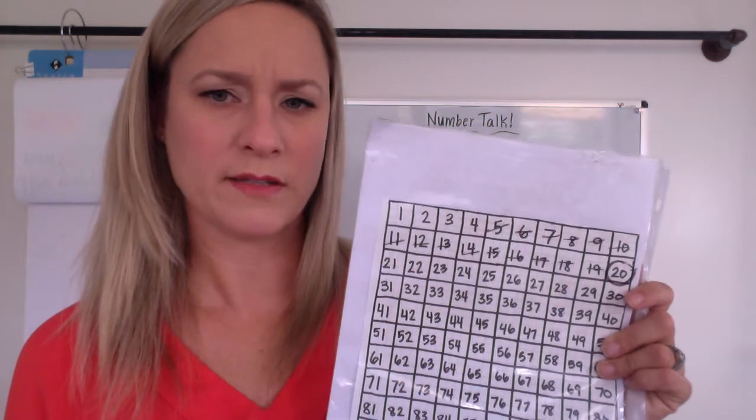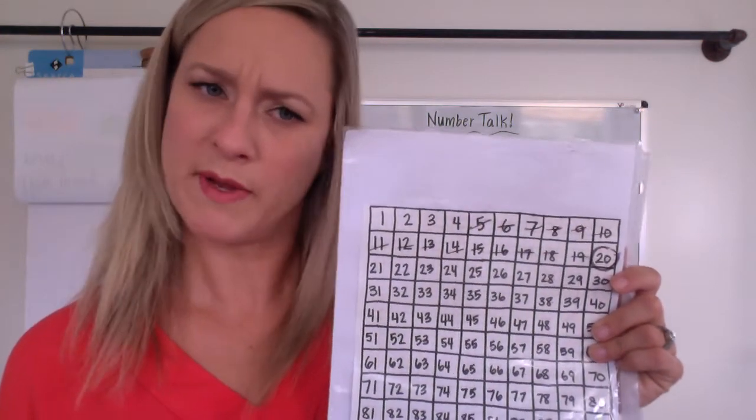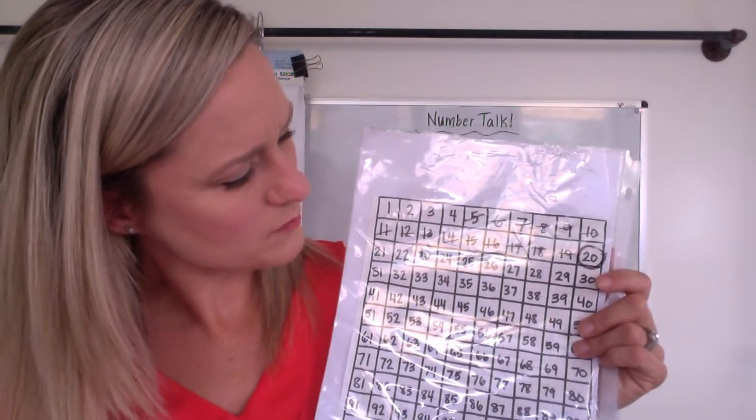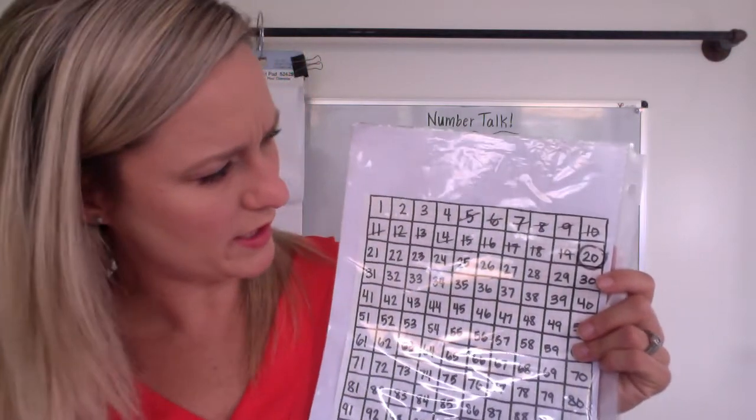Uh-oh. Kids make this mistake a lot. And then they say the answer is four. What was my mistake that I just made? I want you to think about that. Because right now my answer is showing four. What mistake did I make?